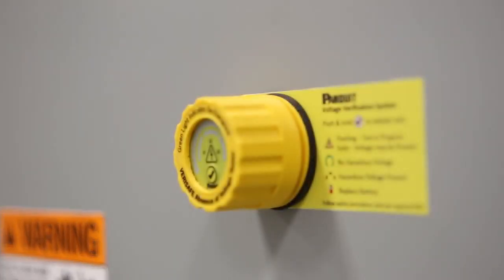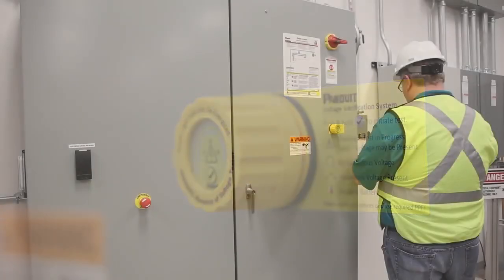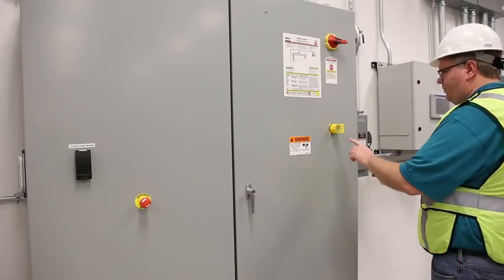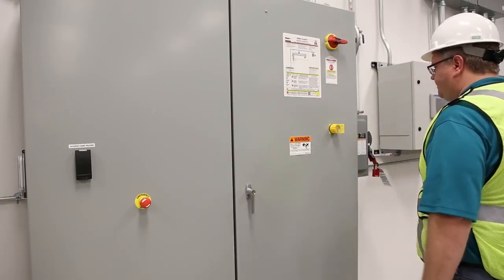The indicator module, which serves as the user interface, is typically installed in the door of the electrical panel. This module is designed to keep hazardous voltage away from the user.